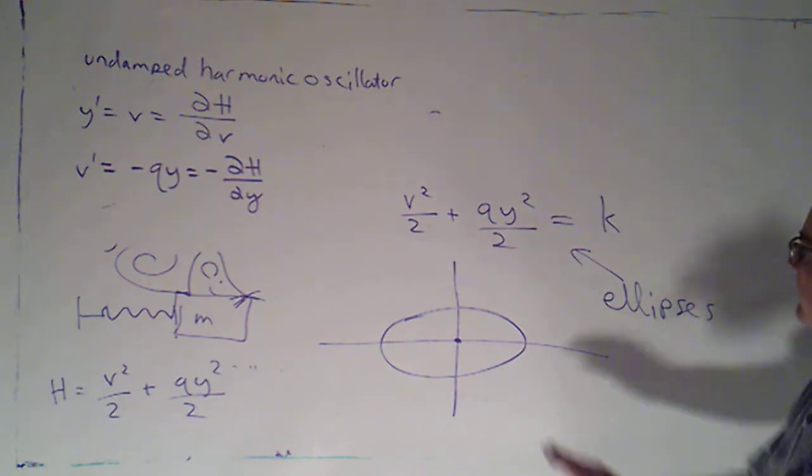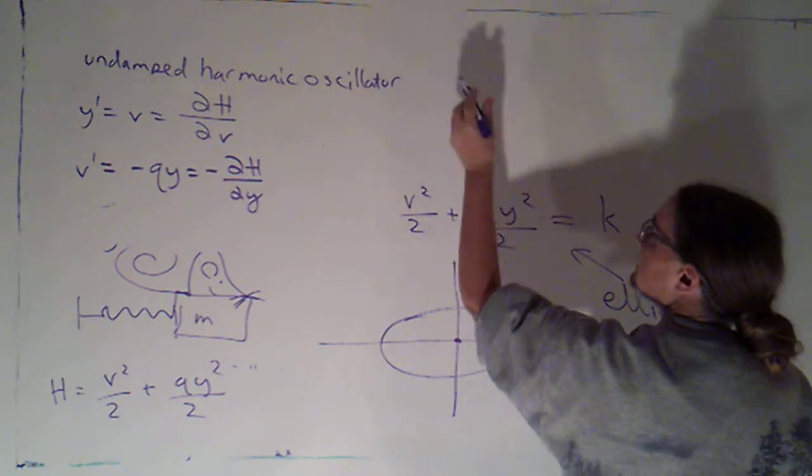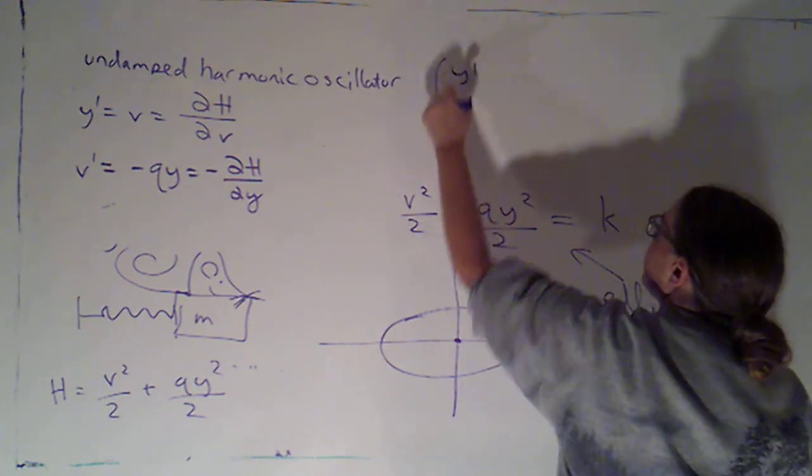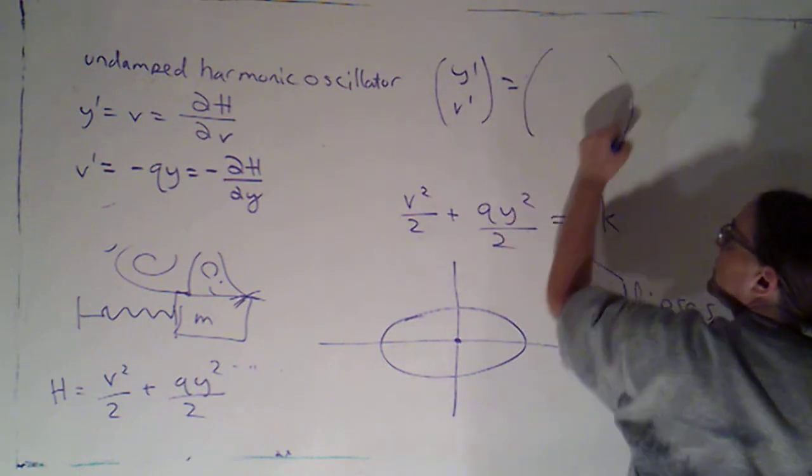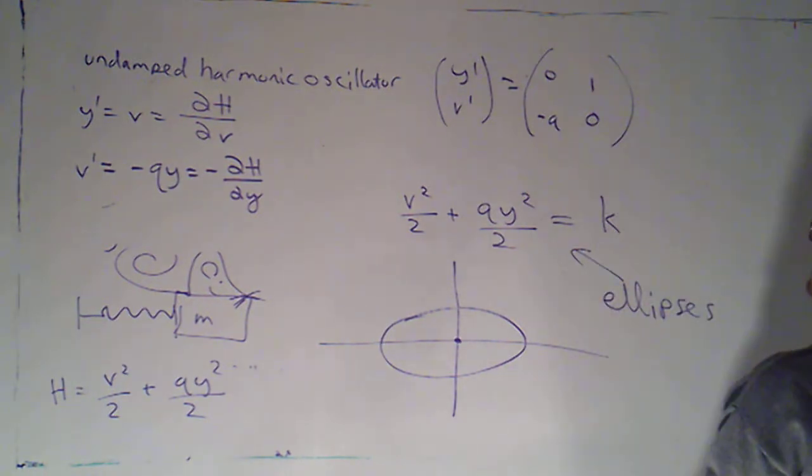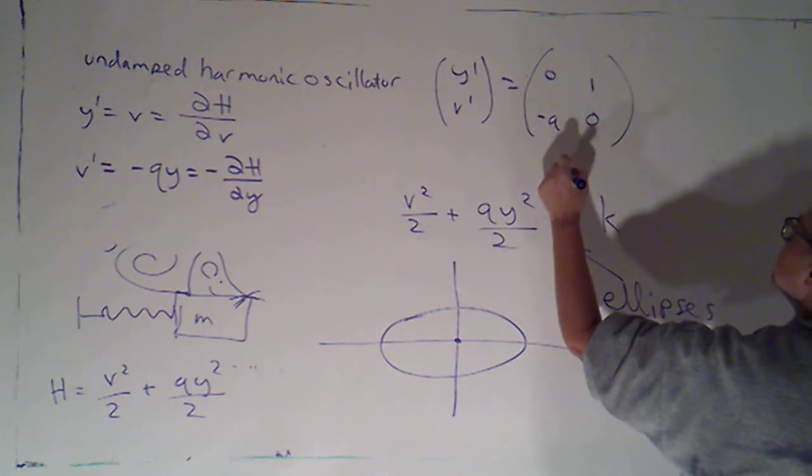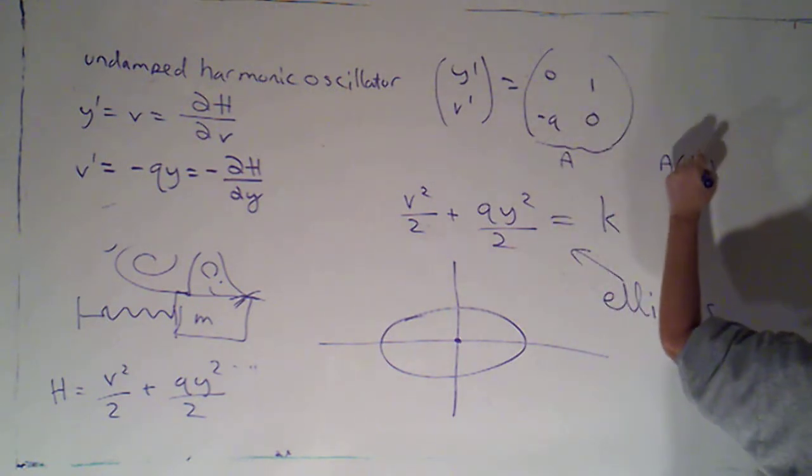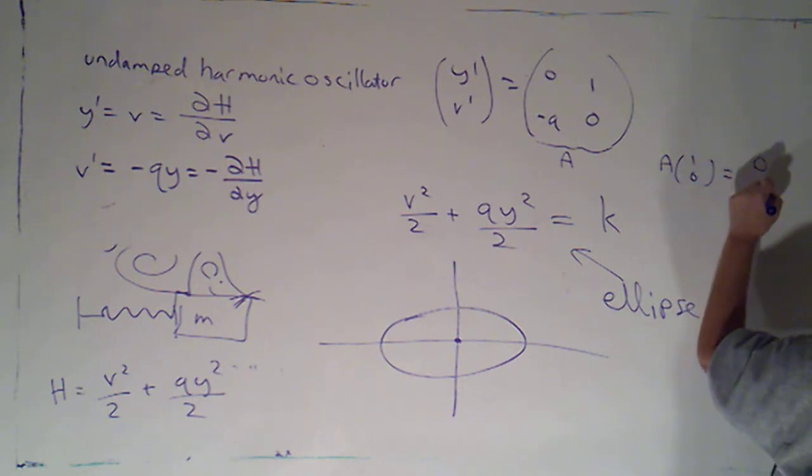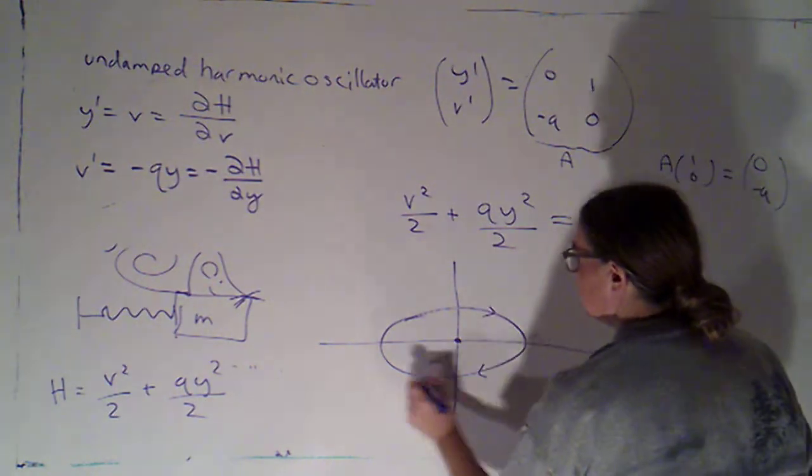Now, I'd have to look at the individual system. I'd have to look at what the value of q was to find out. I think I can actually figure out from this which way we're rotating, because I could write this as y prime v prime equals 0, 1, negative q, 0. If I call that matrix A, A times 1, 0 is just 0, negative q. So, when I'm at position 1, 0, I'm not going left or right, but I am going down or rotating this way.